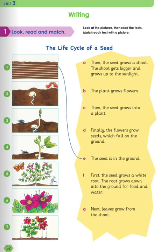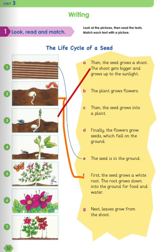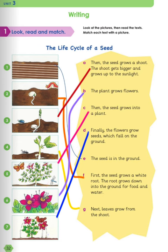Next is writing. Look, read, and match. This is the life cycle of a seed. We have seven pictures and text here. We have to look at the pictures, then read the text, and match each text with a picture. The first one is already done for you — the seed is in the ground. Number 2: first, the seed grows a white root. The root grows down into the ground for food and water. Number 3: then, the seed grows a shoot. The shoot gets bigger and grows up to the sunlight. Number 4: next, leaves grow from the shoot. Number 5: then the seed grows into a plant. Number 6: the plant grows flowers. And finally, the flowers grow seeds which fall on the ground. That was interesting — the life cycle of a seed.